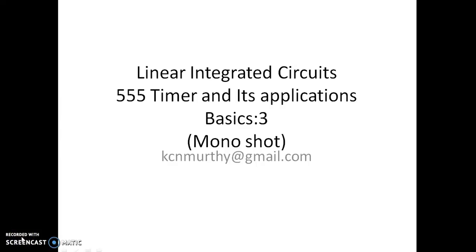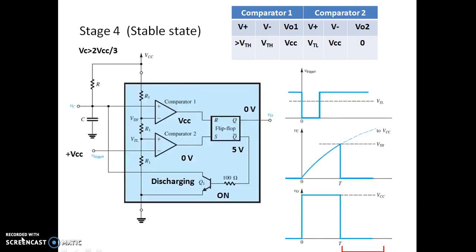Welcome to the third video of this linear 555 timer and its applications. We shall continue with the monoshot. In the previous video we were discussing the fourth stage of the monoshot operation. In this particular case we are considering the capacitor voltage is just greater than VTH, and the corresponding trigger voltage condition is more than VTL.